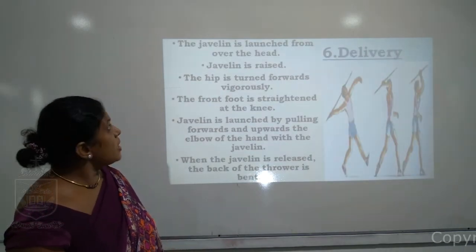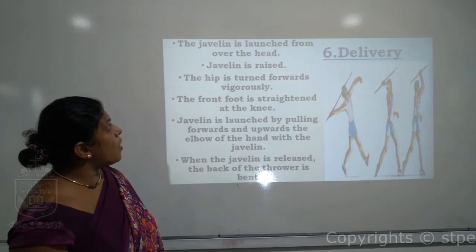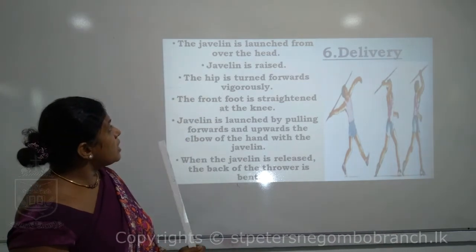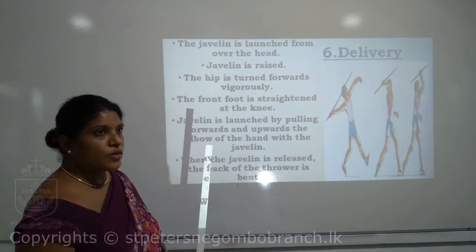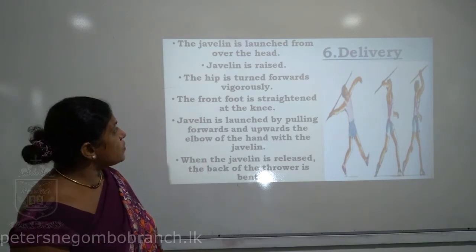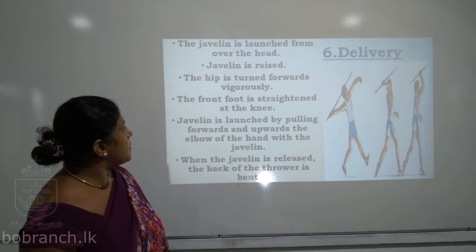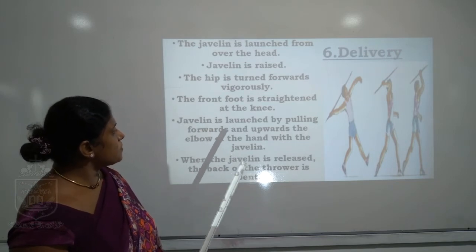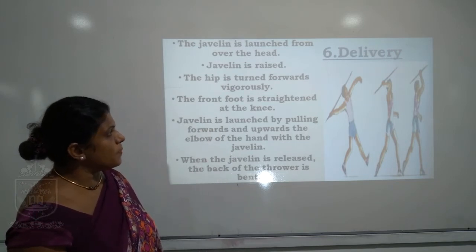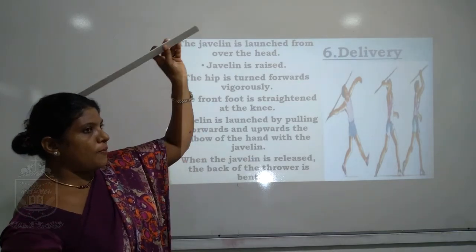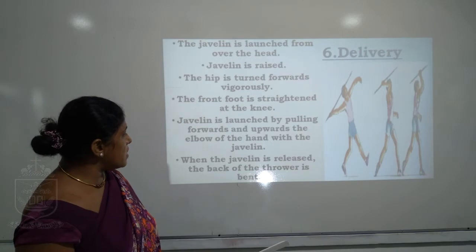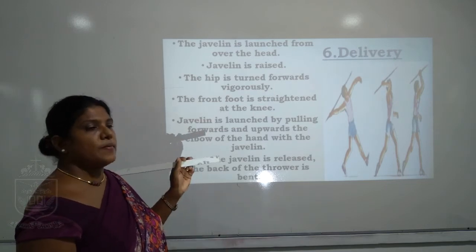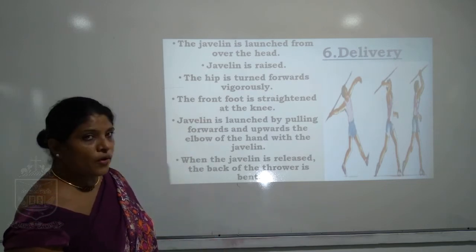Sixth: delivery. The javelin is launched from over the head — not below the head. The hip is turned forward vigorously. The front foot is straightened at the knee. The javelin is launched by pulling the elbow of the throwing hand forward and upward. When the javelin is released, the back of the thrower is bent.